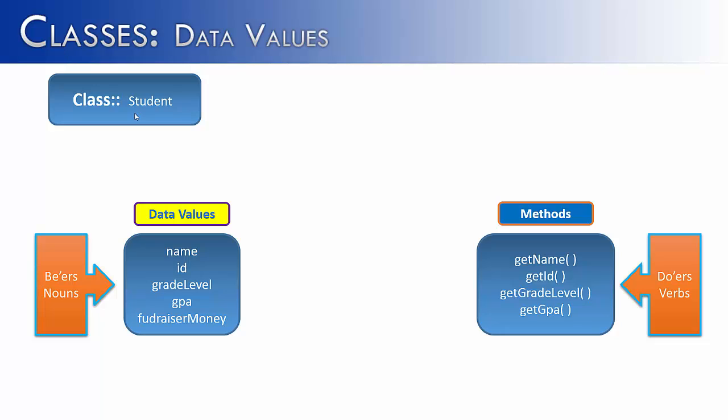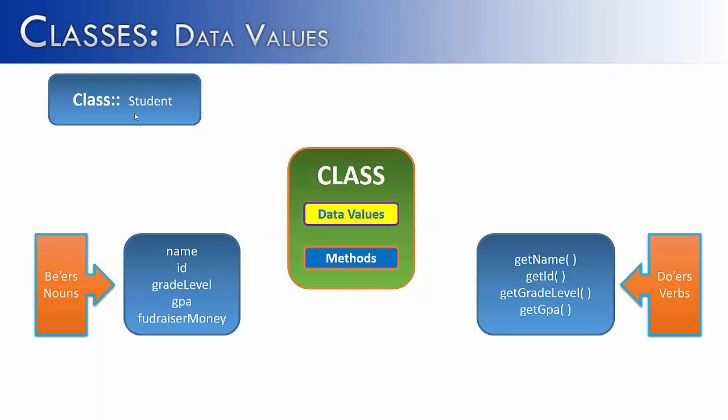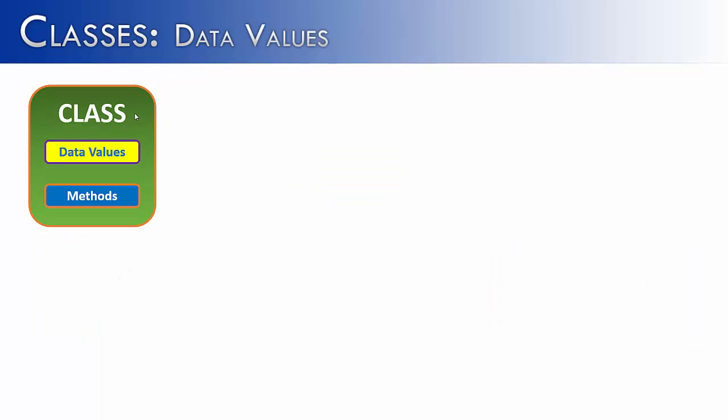Then on the other side we have the doers or the verbs like getName, getID, getGradeLevel or getGPA. We could have many more methods but in this video I'm just trying to show you that these are the two types of class members. And when you put these two things together you get a class. A class has data values and methods. And in this video we're not going to focus on methods, we're going to focus on data values.